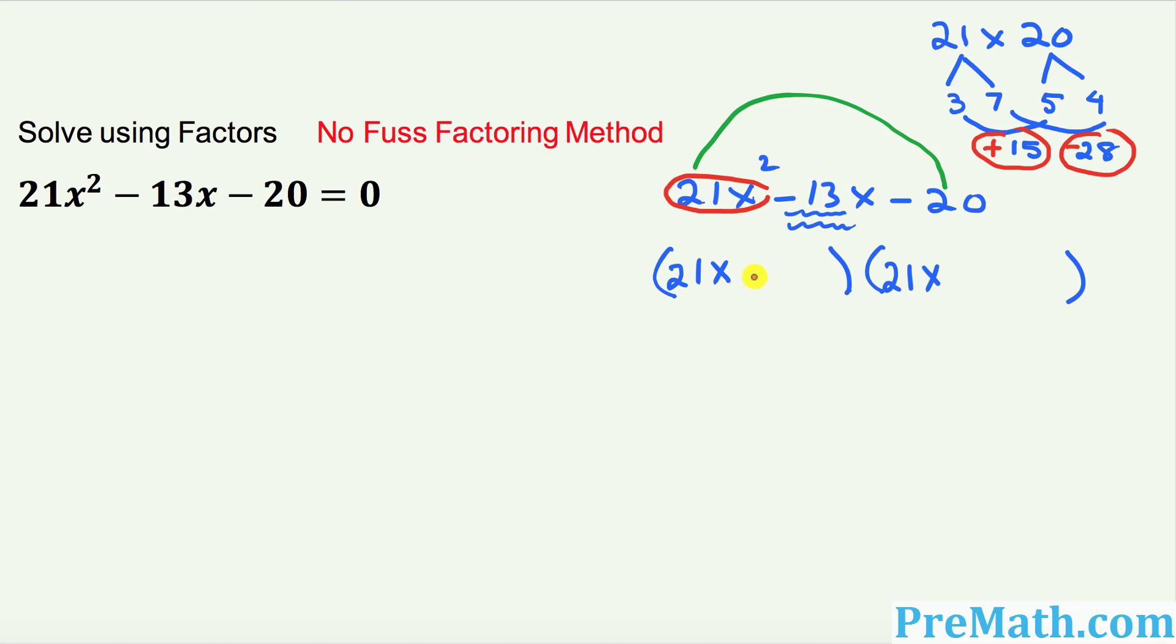So this is going to become positive 15 right up here. And over here is negative 28. So next thing I want you to ask yourself in the first parentheses, what is the biggest number that can divide into 21 and 15? And you can see that number is going to be 3. Now you tell me what is the biggest number that divides into 21 and 28? And of course, that's right, 7.